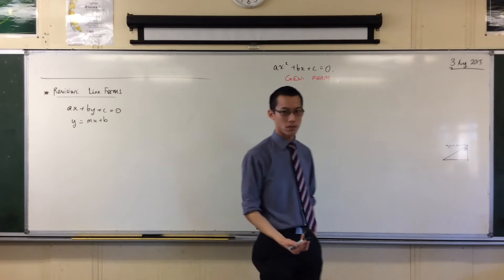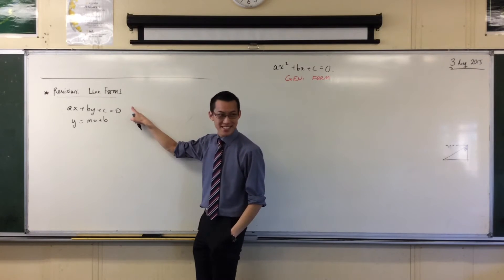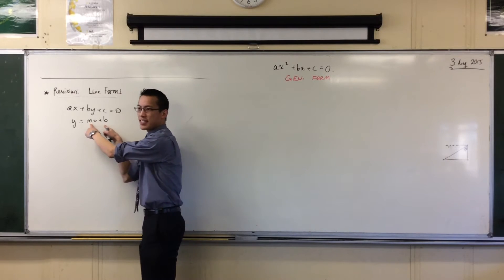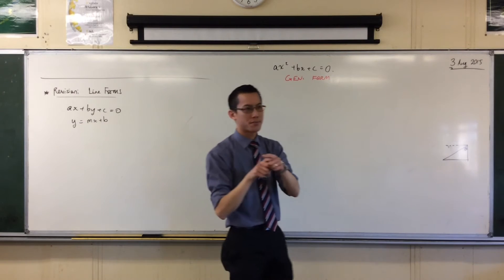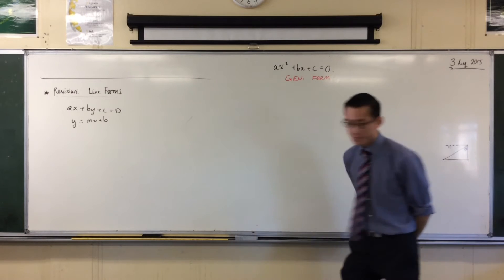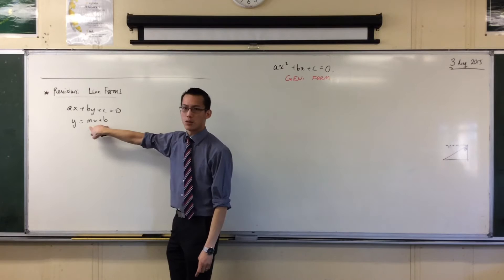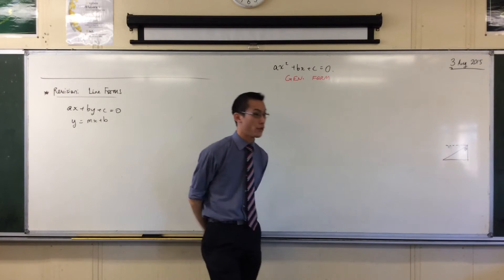What's it called? General form. This is general form? Gradient. So, we call this one gradient intercept form. What intercept? It's the y intercept, right? So, in other words, the form that it's in tells you different features, but this wasn't the only form that we learned. Give me another one.